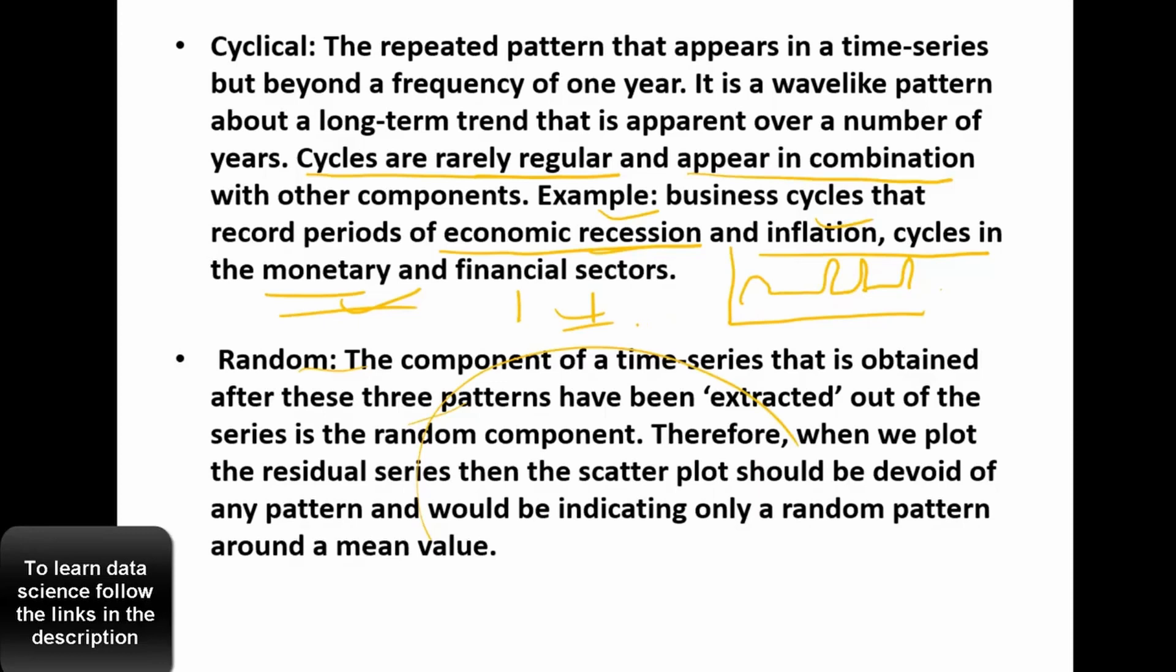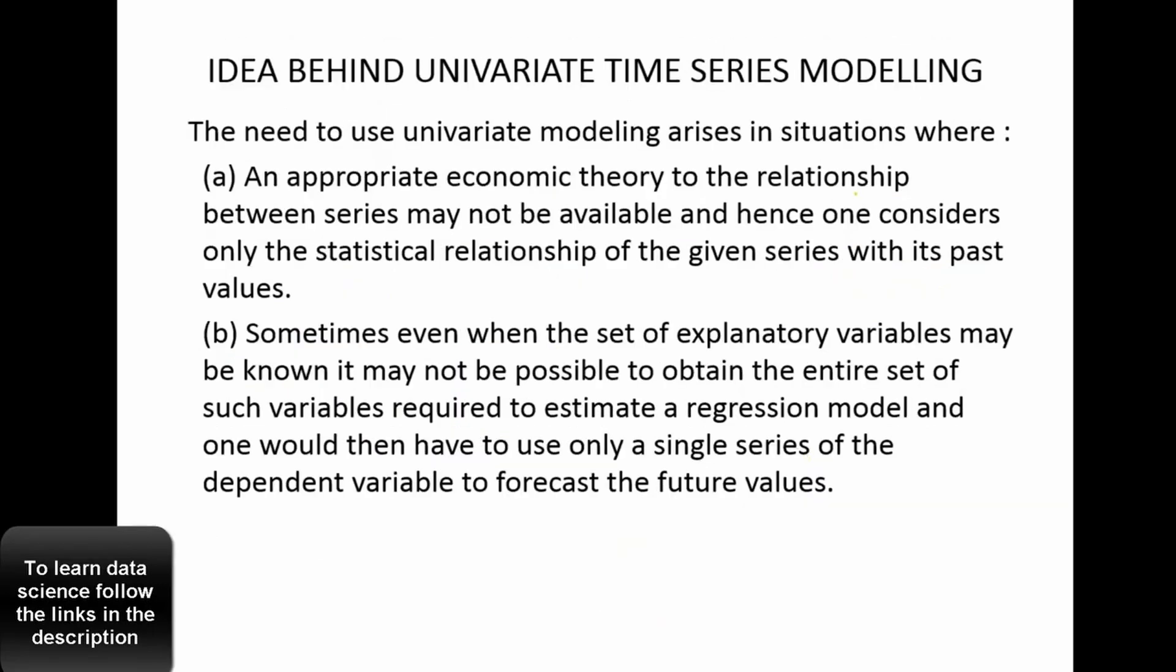So that's likely come up and the last pattern is the random and this is the easiest to understand. So random is like, you know, anything that cannot have a particular pattern. So the idea behind univariate time series is that, to use the past values, past values of the series data, to forecast future.